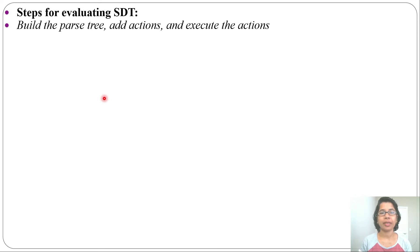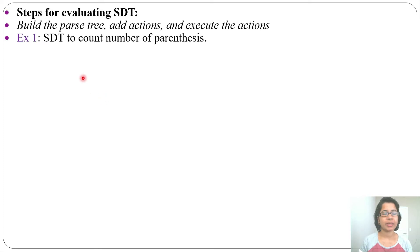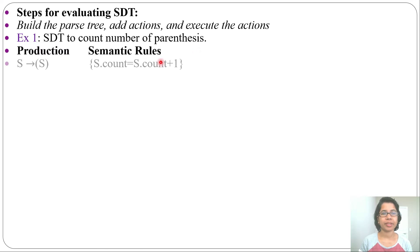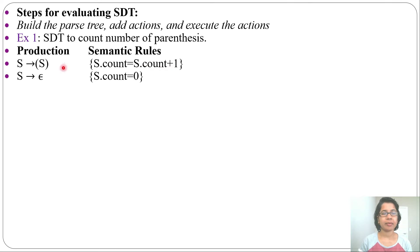Let's see the first example: SDT to count number of parentheses. Some productions with semantic rules are given. First production: S derives start bracket S end bracket, with S.count equal to S.count plus one. Then S derives epsilon, with S.count equal to zero. Our input is three start brackets followed by three end brackets.